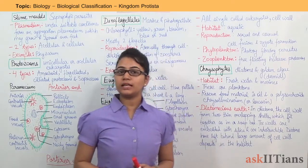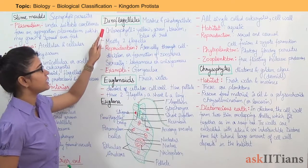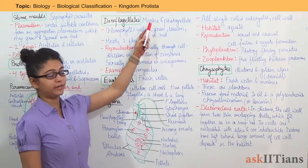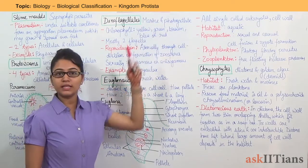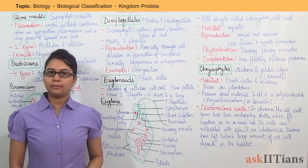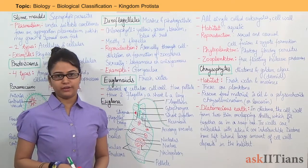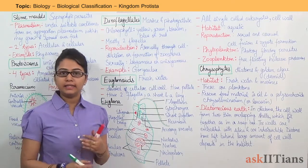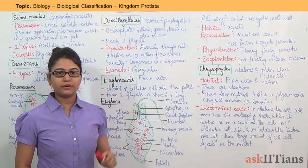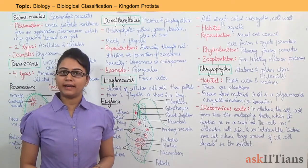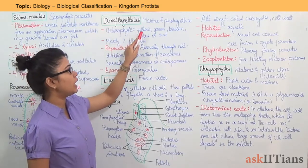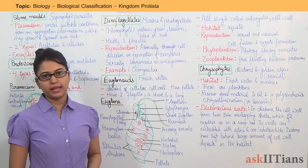Moving on to the next classification, that is dinoflagellates. Dinoflagellates are marine and photosynthetic. Chlorophylls are found in them, and based on these chlorophylls, dinoflagellates display different colors. For example, if red chlorophyll is present, they will appear red. Similarly, yellow, green, brown, and blue varieties exist.